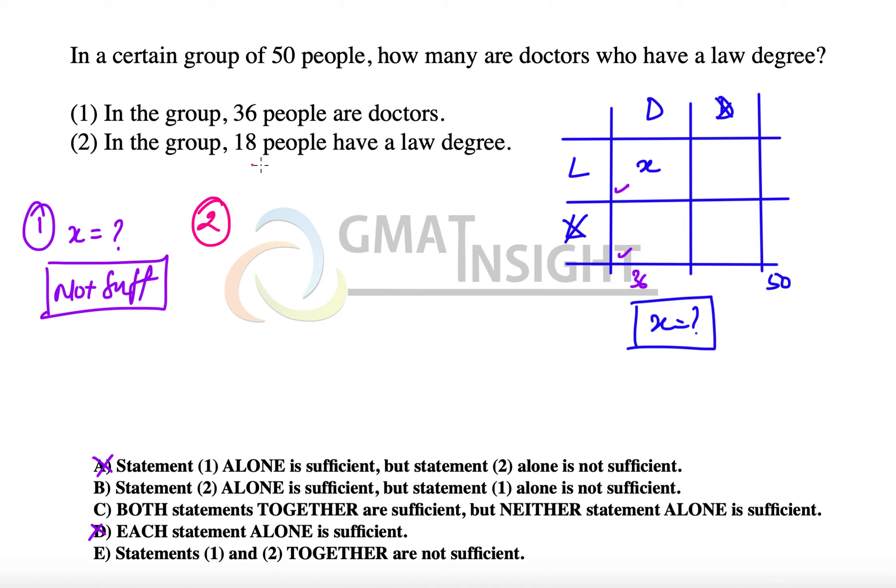The second statement says in the group 18 people have law degree, so this number becomes 18. But once again, this 18 is summation of these two numbers, and because the second part is unknown, x cannot be answered.